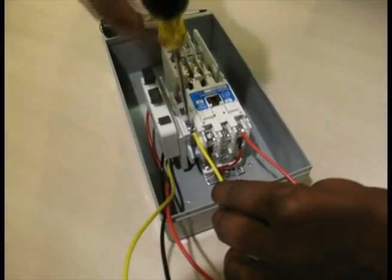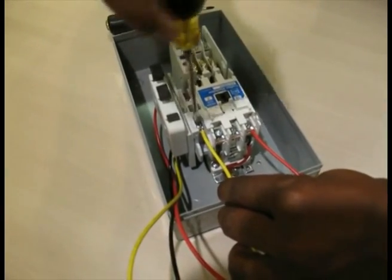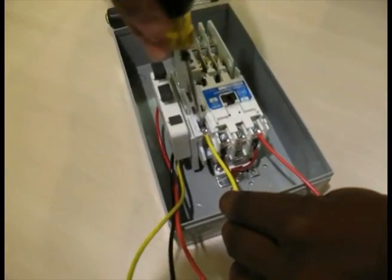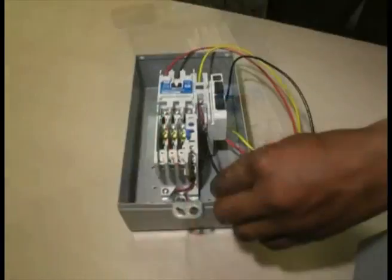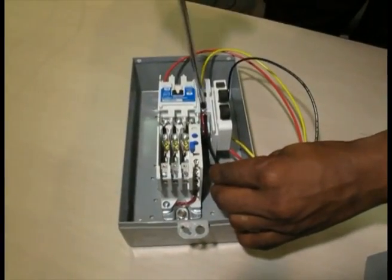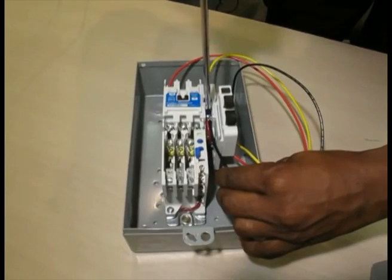Feed the yellow wire into auxiliary contact 2 of 3, and screw down tight. Lastly, feed the black wire into auxiliary contact 3 of 4, and screw down tight.